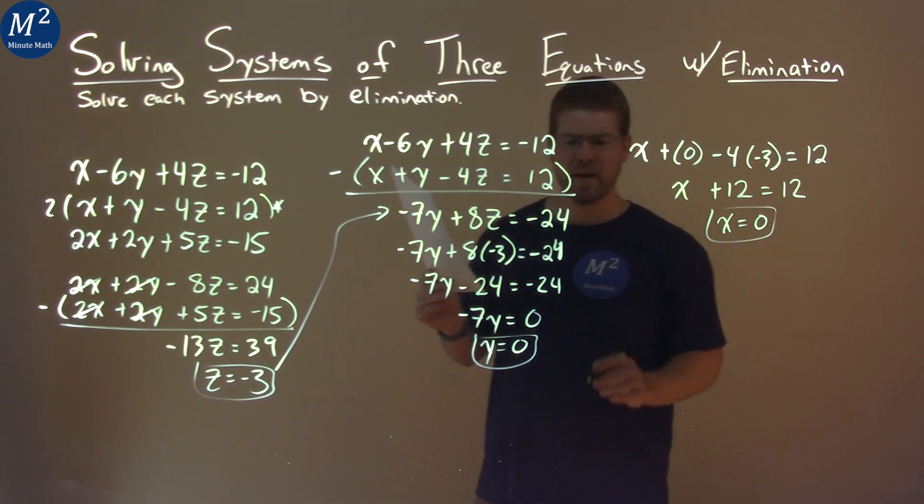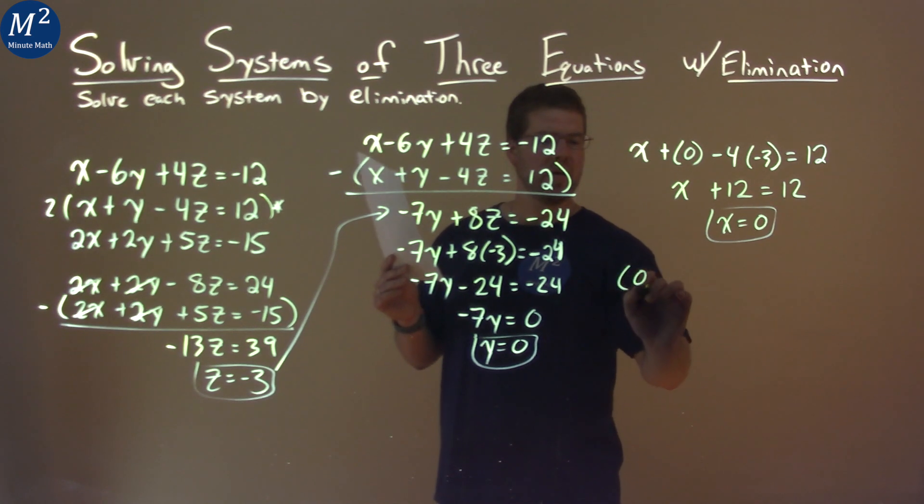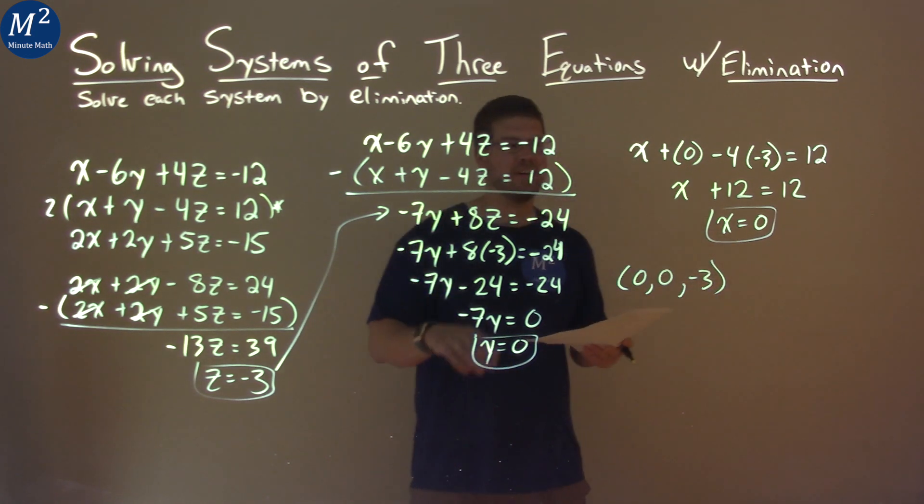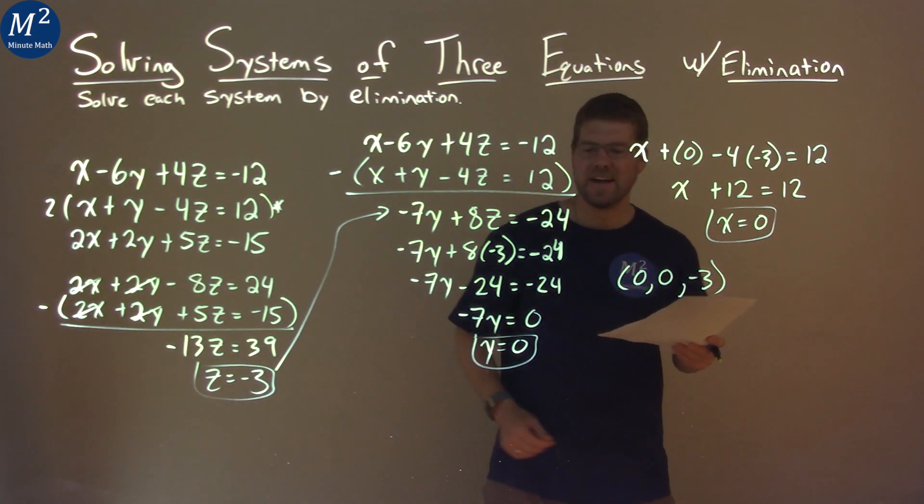So we have our three answers. We can write it as a coordinate point: x is 0, y is 0, and z is negative 3. So there again is our final answer: 0, 0, negative 3.